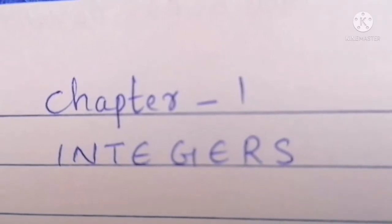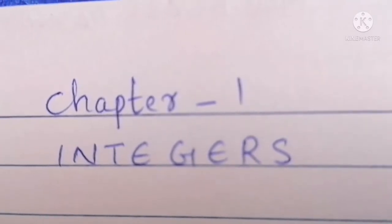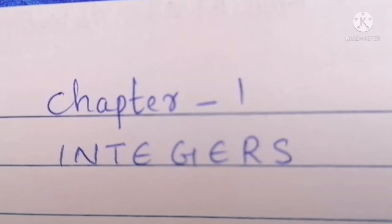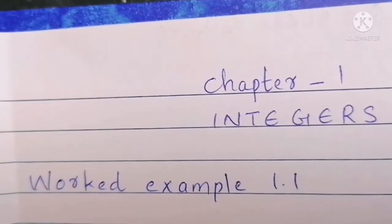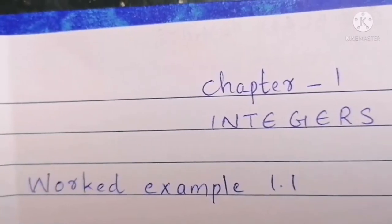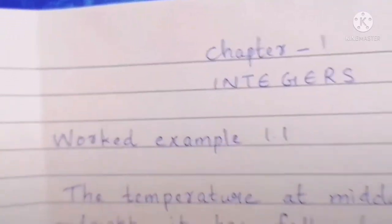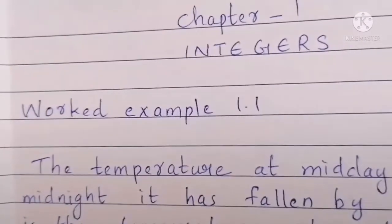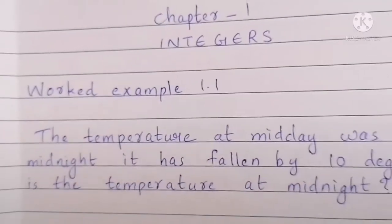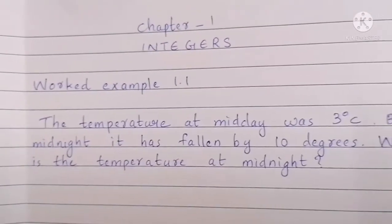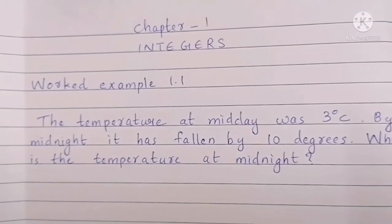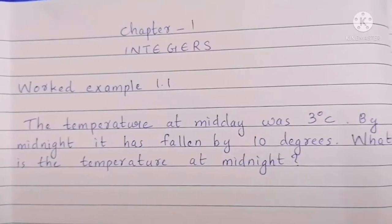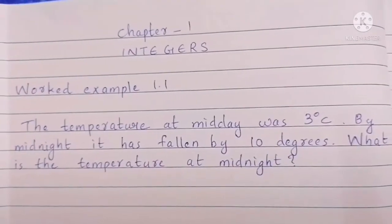Hi, hello, my dear students. Welcome to my class. Today I am going to discuss the exercises in Chapter 1 — Integers. Worked Example 1.1: The temperature at midday was 3 degrees Celsius. By midnight it has fallen by 10 degrees. What is the temperature at midnight?